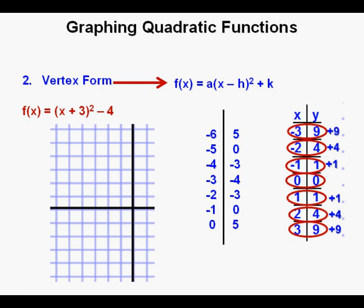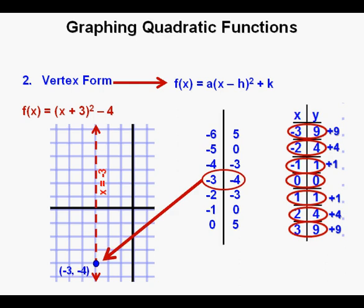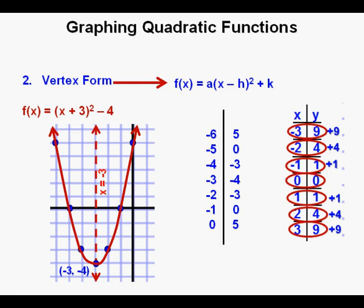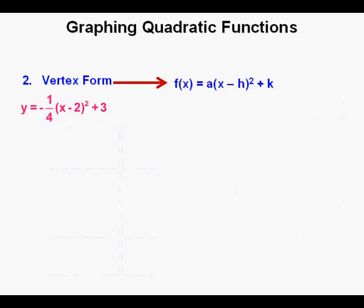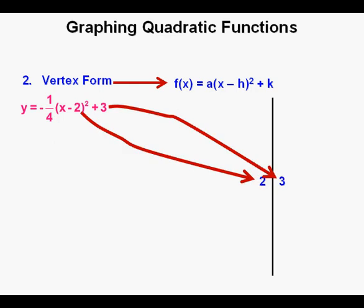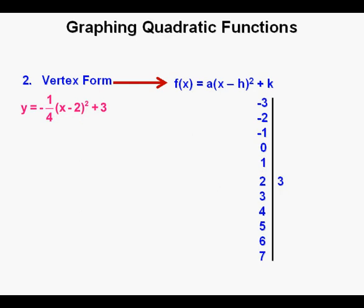Now we'll graph the function on a coordinate grid. We draw in our axis of symmetry at x equals negative 3, then place our vertex at (negative 3, negative 4), and here are all the other points drawn in. Here is the parabola drawn through the points. I hope you can see how easy it is to graph a parabola from the vertex form of the quadratic function.